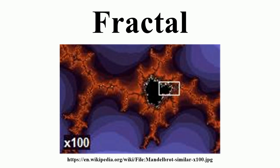As one illustration, trees, ferns, cells of the nervous system, blood and lung vasculature, and other branching patterns in nature can be modeled on a computer by using recursive algorithms and L-systems techniques. Similarly, random fractals have been used to describe and create many highly irregular real-world objects. A limitation of modeling fractals is that resemblance of a fractal model to a natural phenomenon does not prove that the phenomenon being modeled is formed by a process similar to the modeling algorithms.